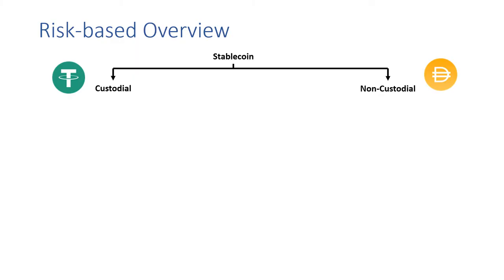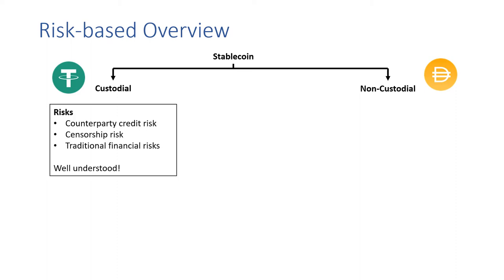We start with a high-level overview of stablecoin risks. One primary distinction is between custodial stablecoins — with an example being USDT — and non-custodial stablecoins, an example being DAI. On the custodial side, we encounter risks including counterparty credit risk, censorship risk, and traditional financial risks. The good news here is that these are fairly well understood in traditional finance.